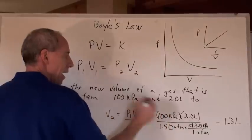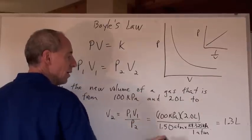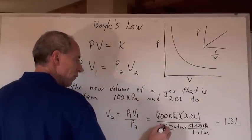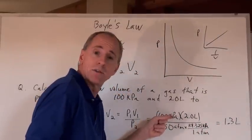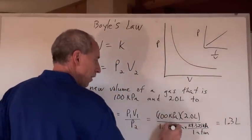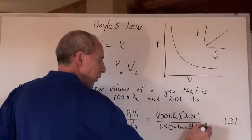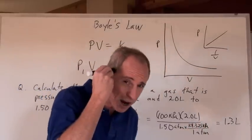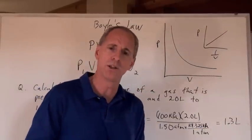100 kPa and 2 liters are the initial pressure and initial volume divided by the final pressure, which is 1.5 atmospheres, but we don't want atmospheres here, or we could have turned that into atmospheres. So I just did, look, 1.5 atmospheres times 101.325 kPa per 1 atmosphere because I've memorized those conversion factors and you actually get 1.3 liters.